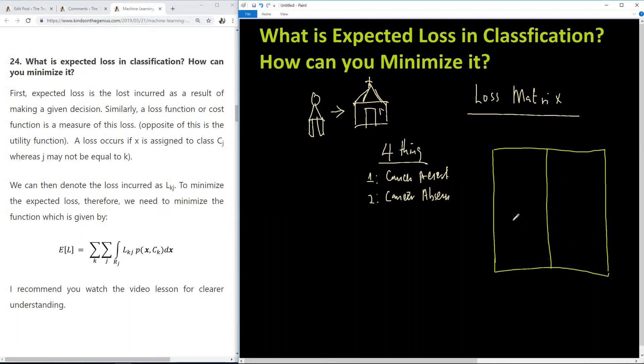What we're now talking about is a loss matrix. Pay attention to it because it's very important. Let's call this one cancer present, this one cancer absent, and now let's call this treatment given, treatment not given.